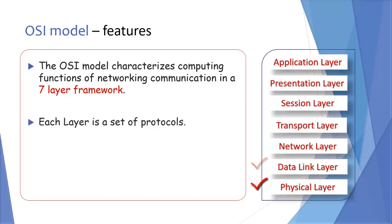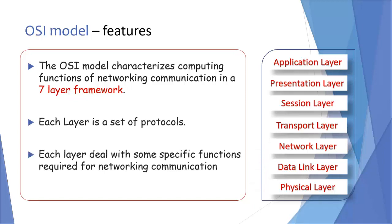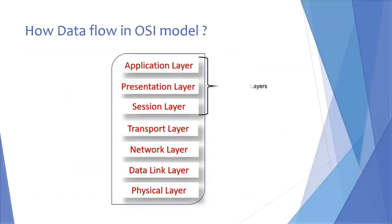Each layer is a set of protocols, means a set of rules. Each layer deals with some specific functions which are required for networking communication. The top three layers are known as the software layers, and they deal with the software specifications or protocols.